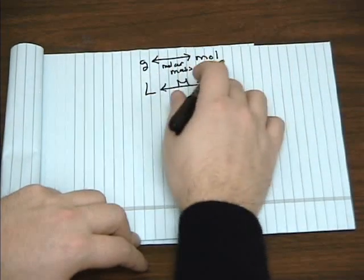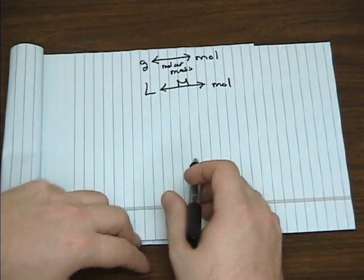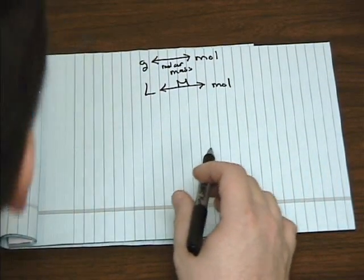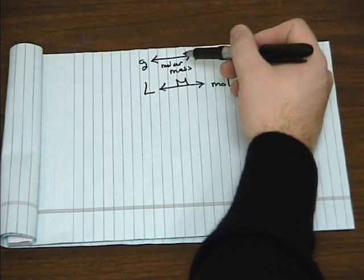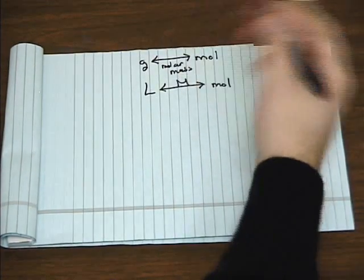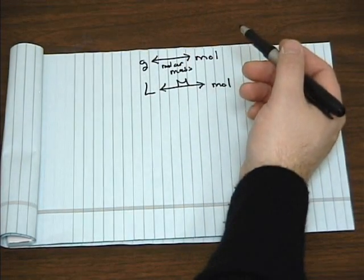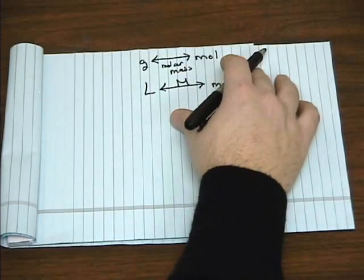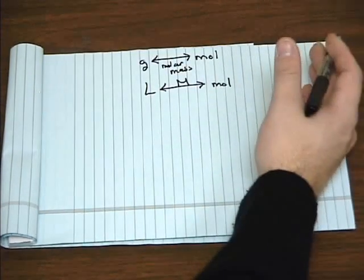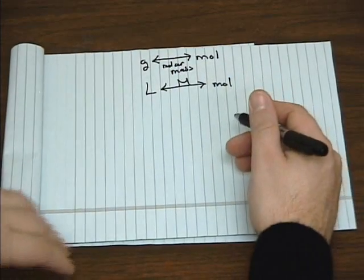The molarity unit allows us to convert between units of liters and moles. So if you want to go between grams and moles, that's molar mass. Between liters and moles, that's molarity. One difference between the two is you can get molar mass from the periodic table. You can't get molarity by looking at the periodic table. You're either given the molarity of the solution, or you're given other information, and you can calculate the molarity first, like we saw in the previous example with sodium chloride.